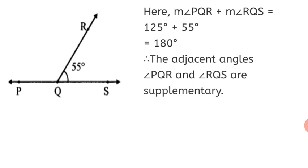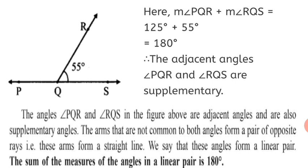Therefore, these two angles are adjacent as well as supplementary. Angle PQR and Angle RQS are supplementary. The arms that are not common to both angles form a pair of opposite rays — that is, these arms form a straight line. We say that these angles form a linear pair.